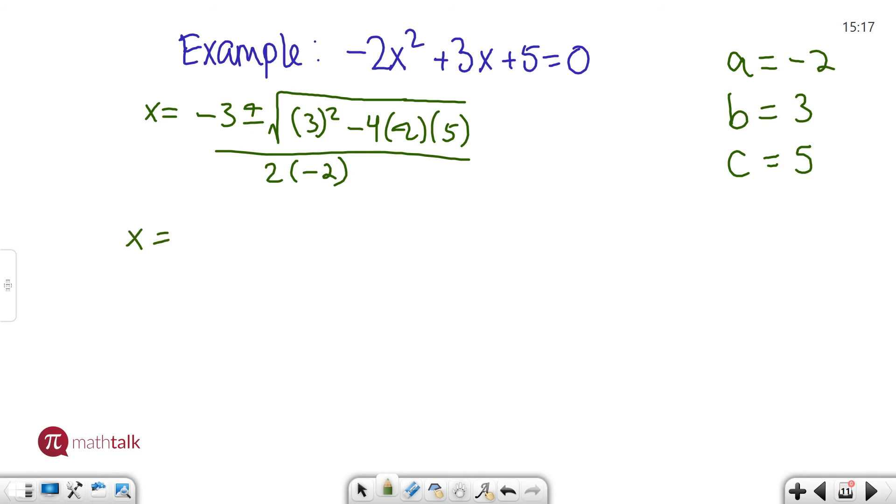x equals negative 3 plus or minus. 3 squared is 9. Negative 4 times negative 2 is positive 8. And positive 8 times 5 is positive 40. All over negative 4. Let's keep going. x equals negative 3 plus or minus. 9 plus 40 is 49. And we can go from there.